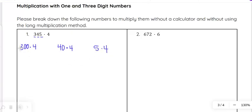300 times 4 I would do in my head. 3 times 4 is 12. So that's 1,200. 40 times 4, 4 times 4 is 16, and then there's one 0 there. And 5 times 4 is 20. And then if I add those together, I might start by adding these.